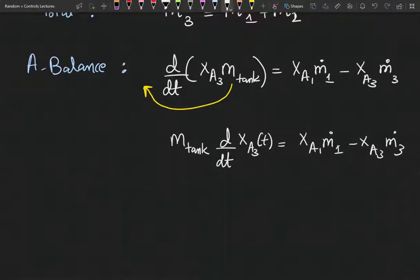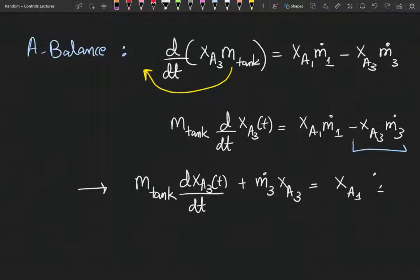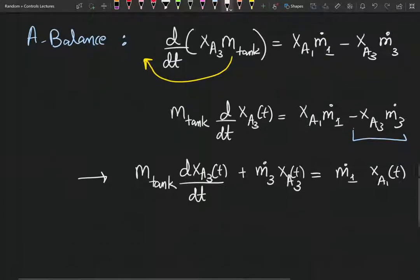Let's see if I can rearrange this. I'm going to add XA3 times m3 to both sides. I need your kind attention for this. If you feel I'm going too fast, you can just watch it at 0.75 times the speed. Figure that out, improvise, adapt. XA3 is my output and XA1 is my input.